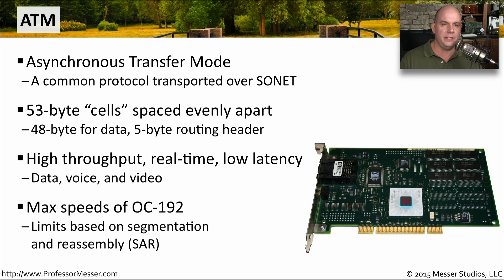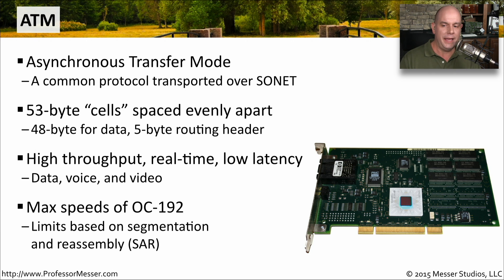We got maximum speeds of OC192, and at the time these were very, very high-speed networks. However, we had to limit the speeds because every time you pulled data off of the ATM network, it had to be segmented to put on and reassembled when it came off, so there was a bit of overhead associated with that.